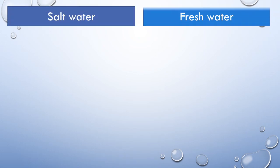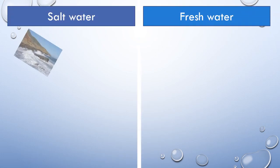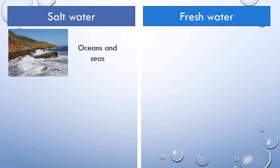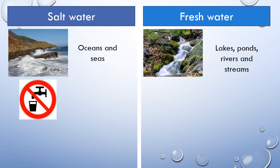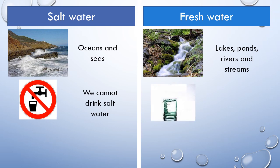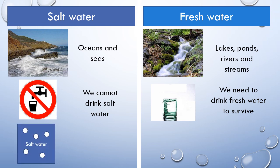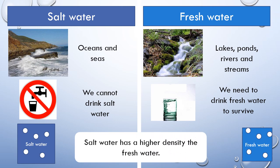So what do we now know about salt water and fresh water? We know that salt water is found in oceans and seas, whereas fresh water can be found in lakes, ponds, rivers and streams. We know that we cannot drink salt water and it can harm us, but we do need to drink fresh water to survive. We also know that salt water has a higher density than fresh water.